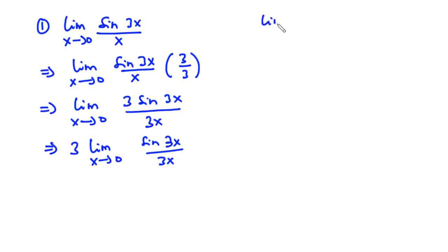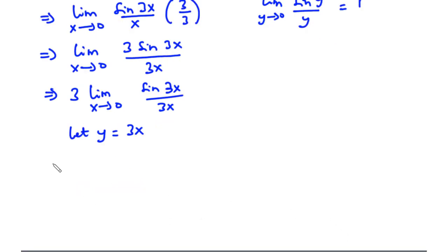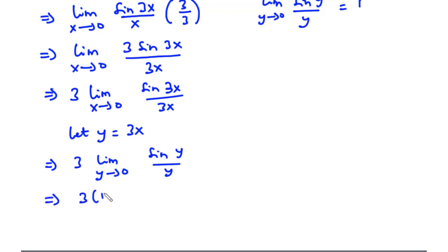We recall that the limit of sine x divided by x as x approaches 0 is equal to 1. Similarly, the limit of sine y divided by y as y approaches 0 is also 1. Because we have 3x in both the numerator and denominator, we let y equal 3x. So the limit of sine y divided by y as y approaches 0 is 1, giving us 3 times 1, which equals 3.